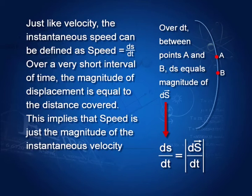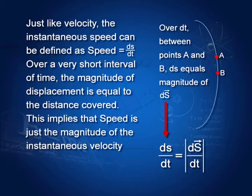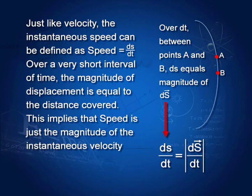To relate instantaneous velocity and speed, we take the body moving on a curve and take two points very short time away from A to B. The distance is covered in a very short time dt. Since the distance is very short, the displacement would be equal to the distance covered. Therefore, ds/dt would be equal to the magnitude of dS/dt vector. This means that the speed is just the magnitude of the instantaneous velocity.